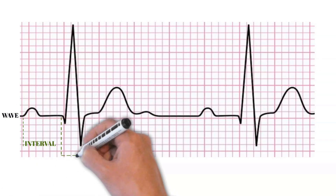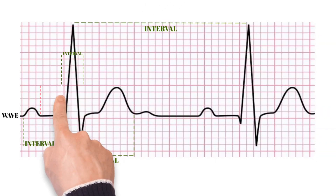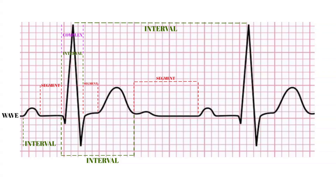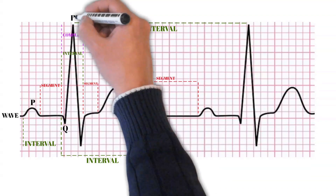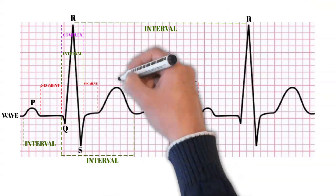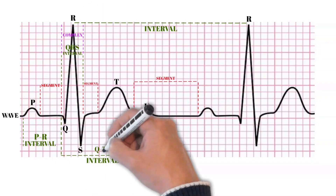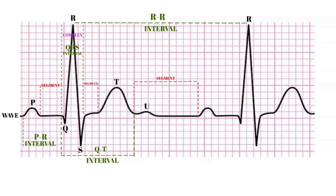A normal ECG contains waves, intervals, segments, and one complex. A wave on the ECG is a positive or negative deflection from the baseline indicating a specific electrical event. The waves include the P wave, Q wave, R wave, S wave, and U wave. An interval is the time between two specific ECG events; commonly measured intervals include the PR interval, QRS interval (also called QRS duration), QT interval, and RR interval. A segment is the length between two specific points on an ECG that are supposed to be at baseline amplitude — neither negative nor positive. Segments include the PR segment, ST segment, and TP segment.